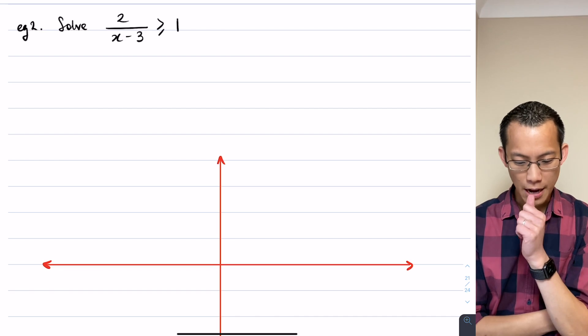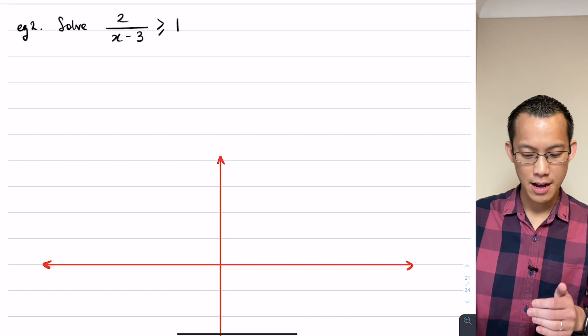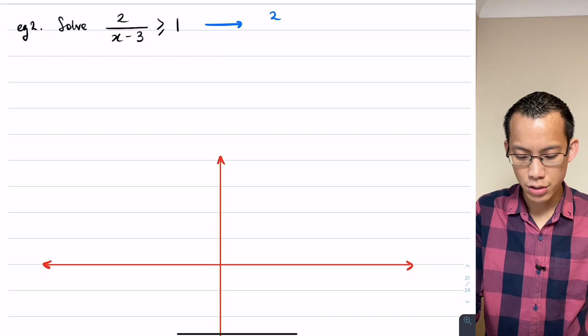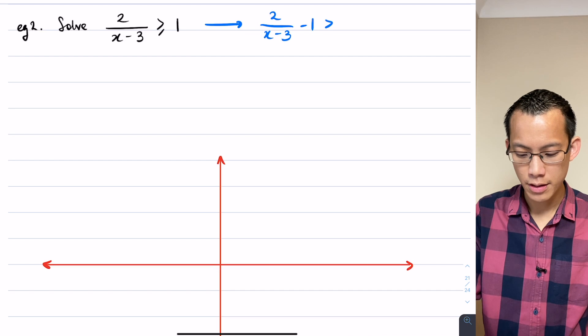Now in this case, again you've got these options. You can have a think about doing this by making the right-hand side equal to 0. So the way I would do that is I would say 2 over x minus 3 take away 1 is greater than 0.